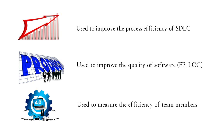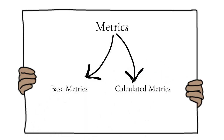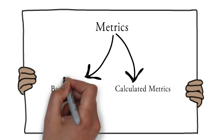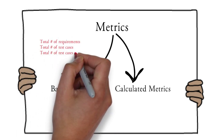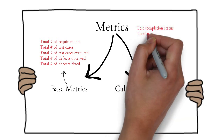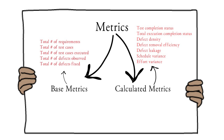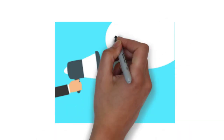Project metrics are divided into base metrics and calculated metrics. Base metrics are readily available data — for example, total number of requirements, total number of test cases, number of test cases executed, or total number of defects raised. In calculated metrics, we derive new data from base metrics — for example, test completion status, defect density, and defect removal efficiency.